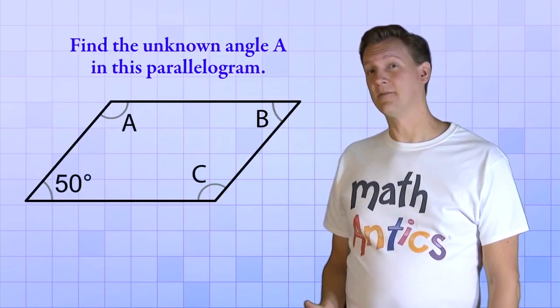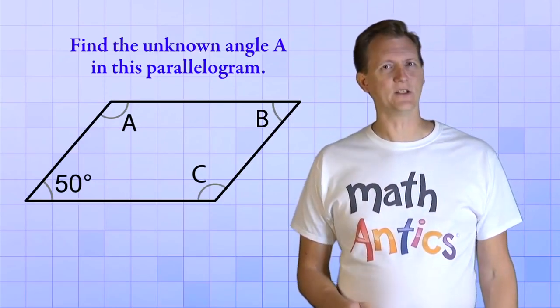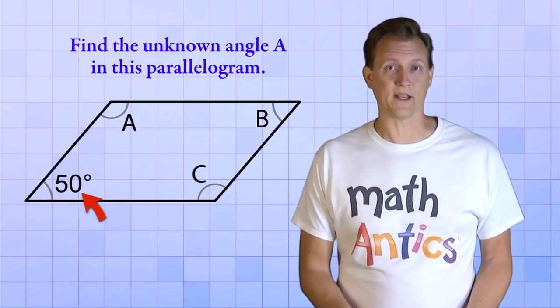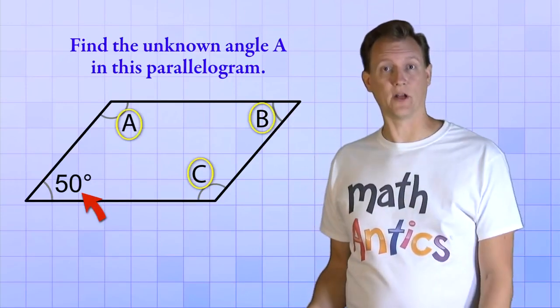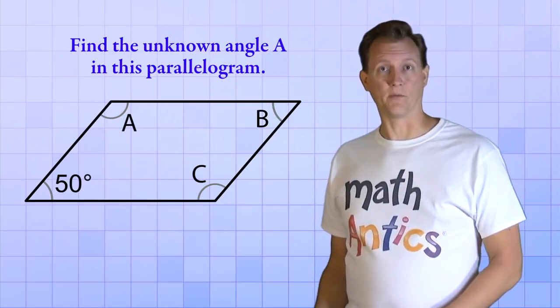Let's look at one more unknown angle problem that's a little tricky. This problem asks us to find the unknown angle A in a parallelogram. But it looks like they only told us what one of the angles is, and the other three are unknown. So how can we possibly figure this one out?